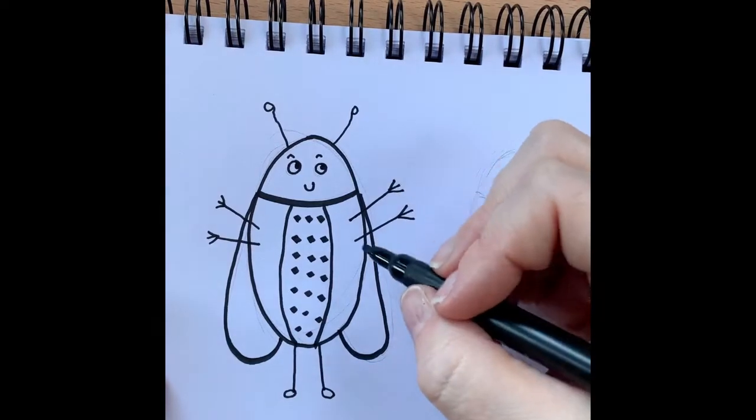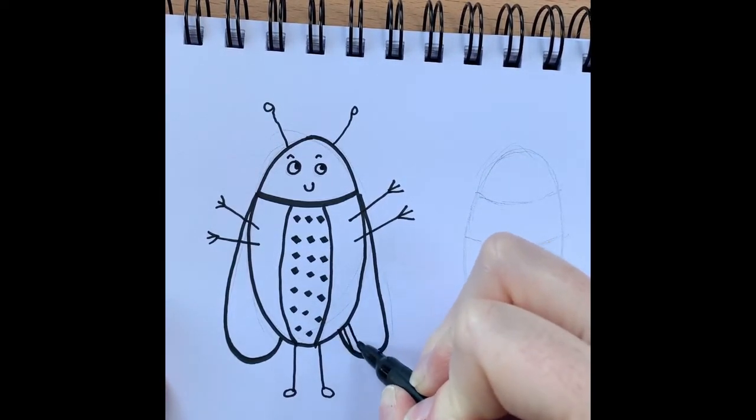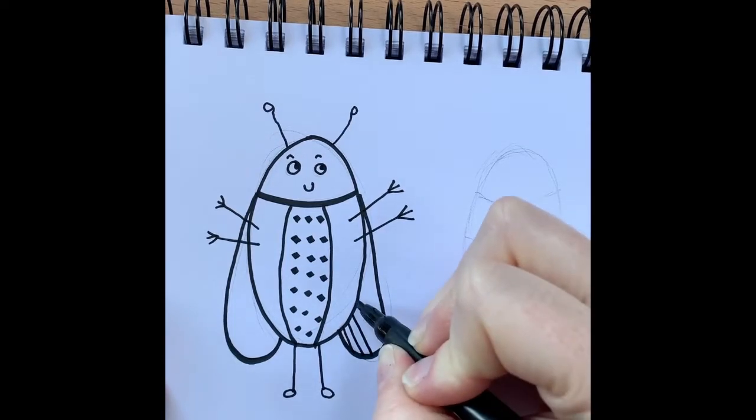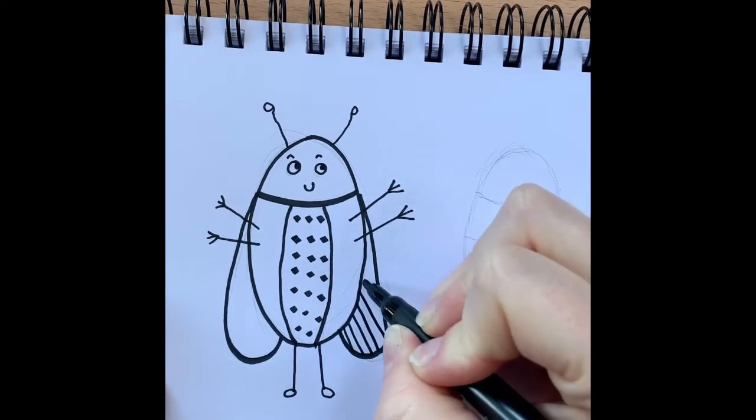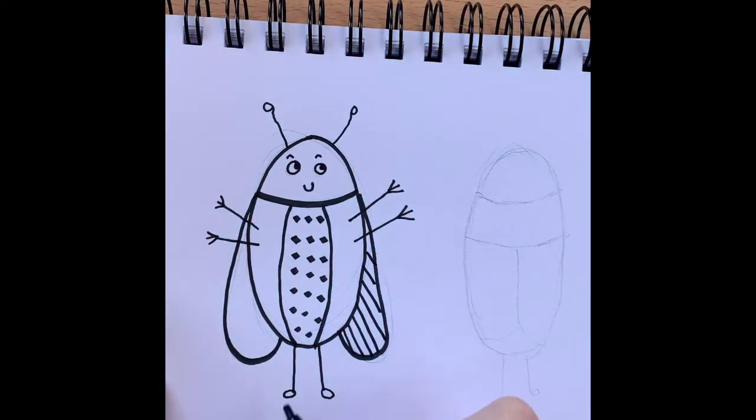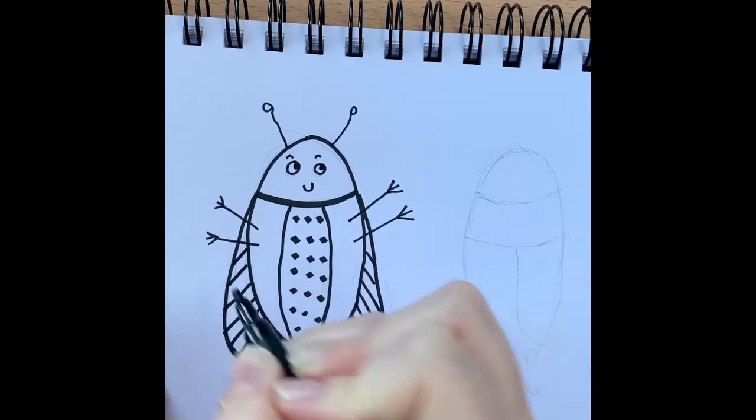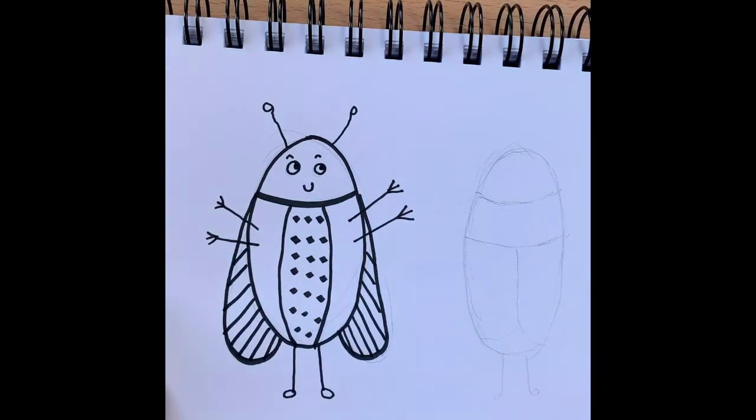Now we're going to do some lines on the wings. So we're going to do one, two, three, four, five, six, seven, eight. And that one. One, two, three, four, five, six, seven, eight on that one as well. So that's my first bug done.